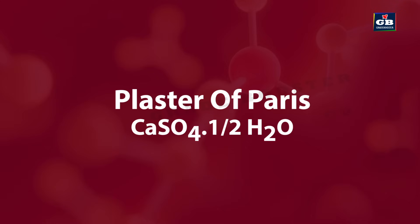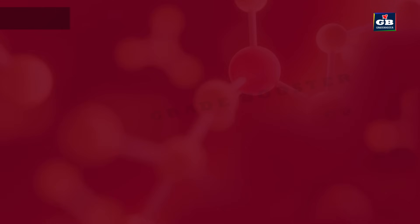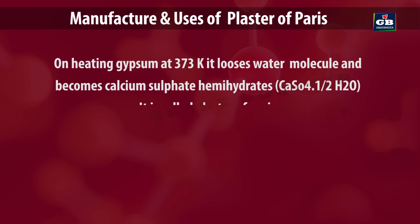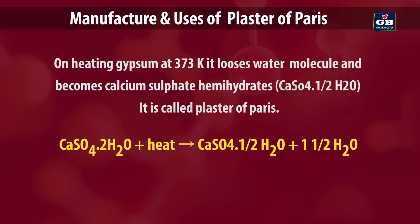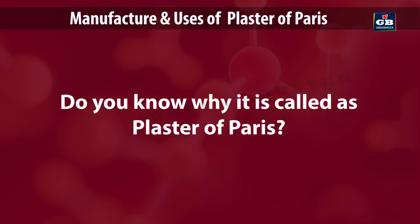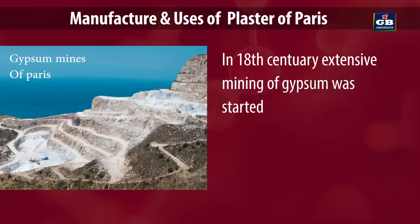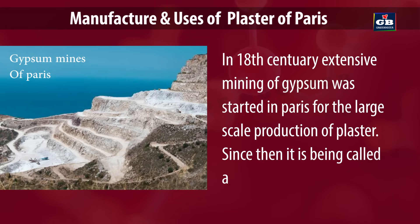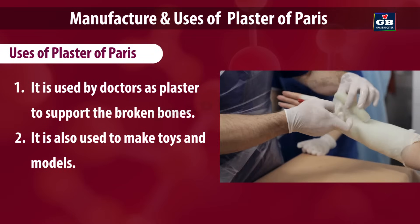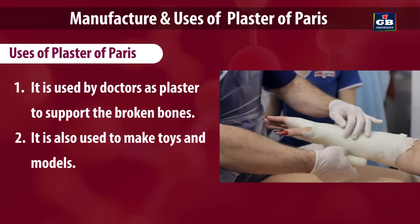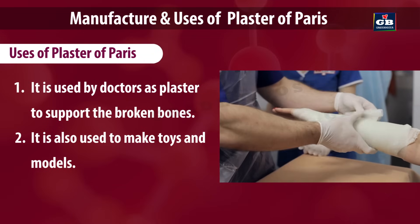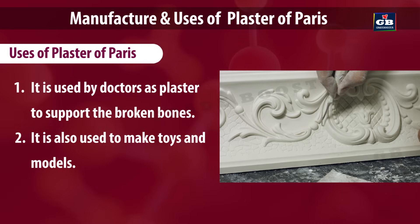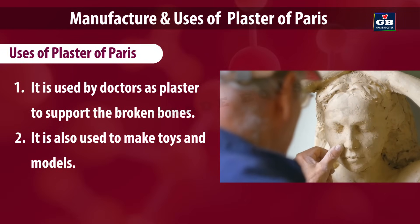Plaster of Paris (CaSO4·½H2O) — Manufacture and uses. On heating gypsum at 373 Kelvins, it loses water molecules and becomes calcium sulphate hemihydrate, called Plaster of Paris. In the 18th century, extensive mining of gypsum was started in Paris for large-scale production of plaster — since then it has been called Plaster of Paris. Uses: it is used by doctors as plaster to support broken bones, and also to make toys and models. This concludes acids, bases and salts.